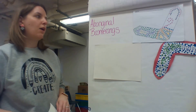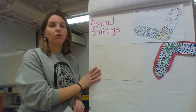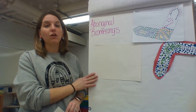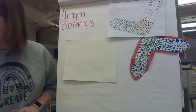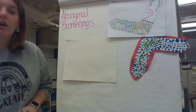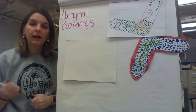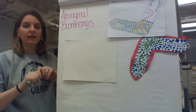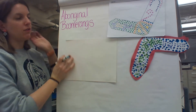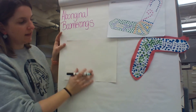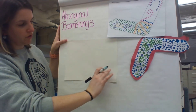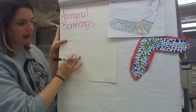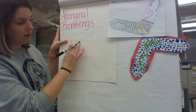And now we are going to talk about how to create your boomerangs. Creating your boomerangs is pretty simple. For the shape of the boomerang, it's kind of like an L. So if you have a full sheet of paper, you could just create an L out of the corner of the paper if you want.